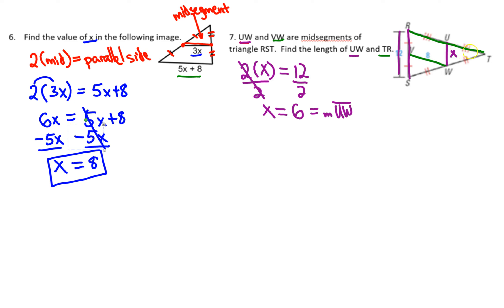Now we need to find the measure of TR. That 8 is the mid-segment that's parallel to TR.